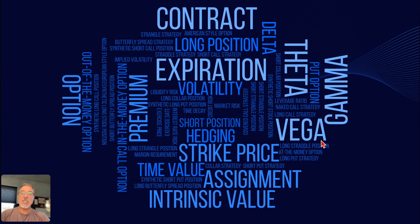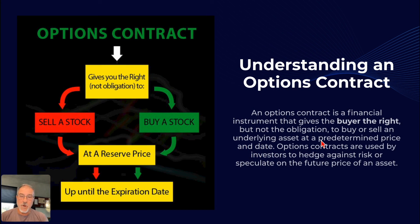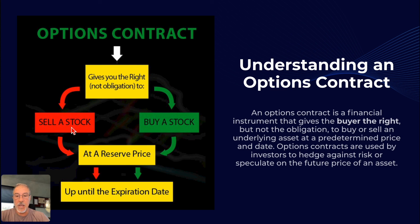Call options — there are lots of different terms around options: contracts, expiration, strike price, assignment, intrinsic value, gamma, vega. We're going to cover a lot of these as we go through the entire series. But the first thing I want to start with is just the basics of an options contract. An options contract gives you the right, but not the obligation, to either buy or sell a stock at a specific price up until the expiration date.